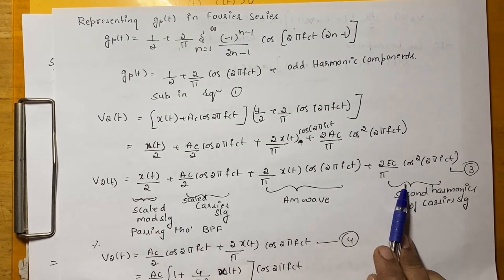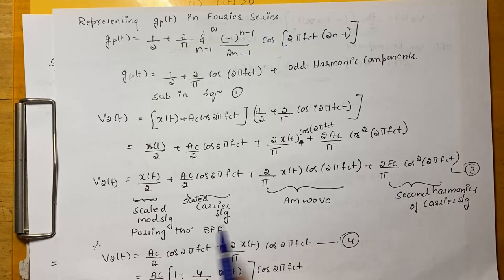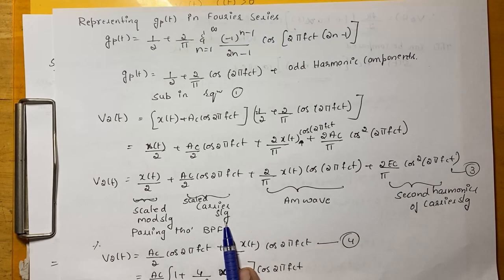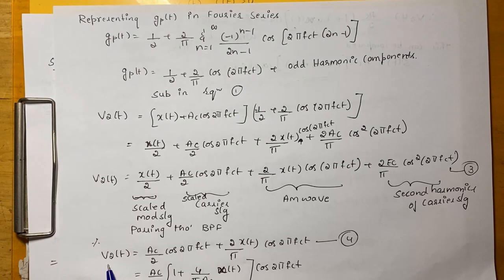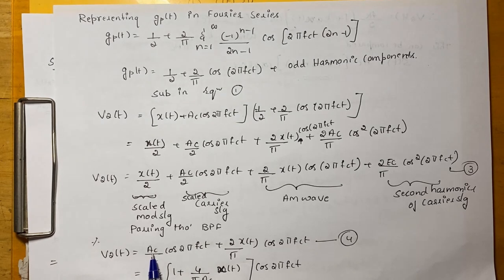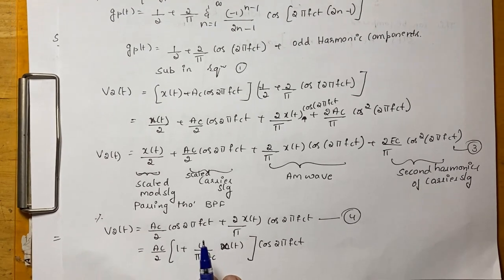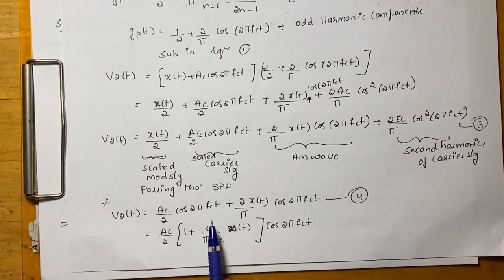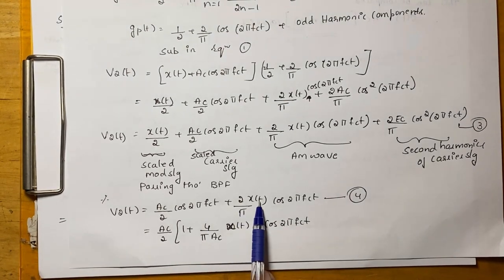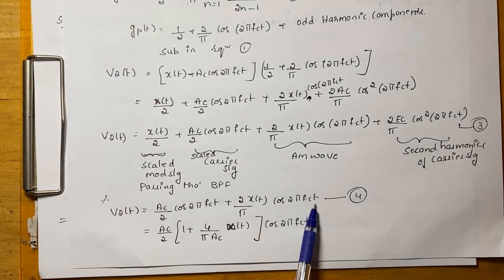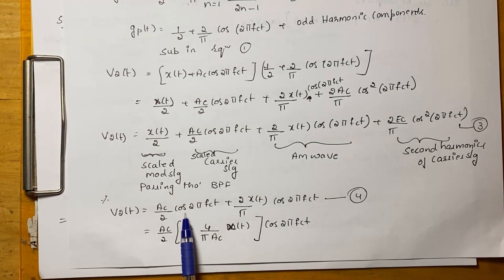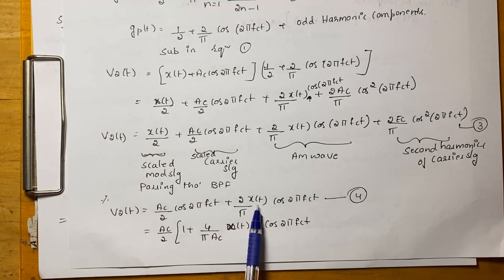All these signals are not required for us. Therefore, passing these signals through a band pass filter will be getting output V2(t) = AC/2 cos(2π FcT) + 2·X(t)/π cos(2π FcT) which is nothing but this is a carrier signal and this is an AM wave.